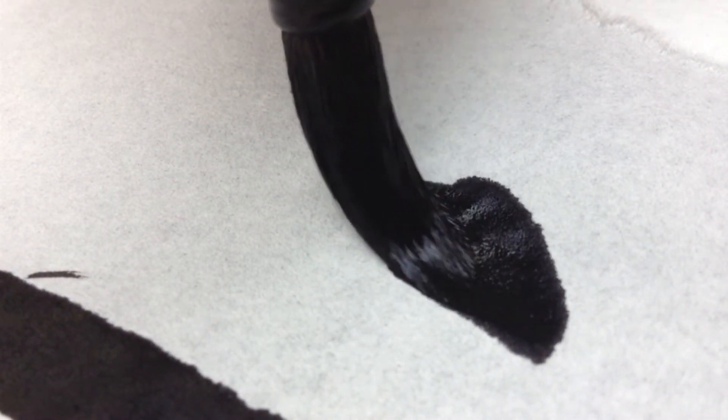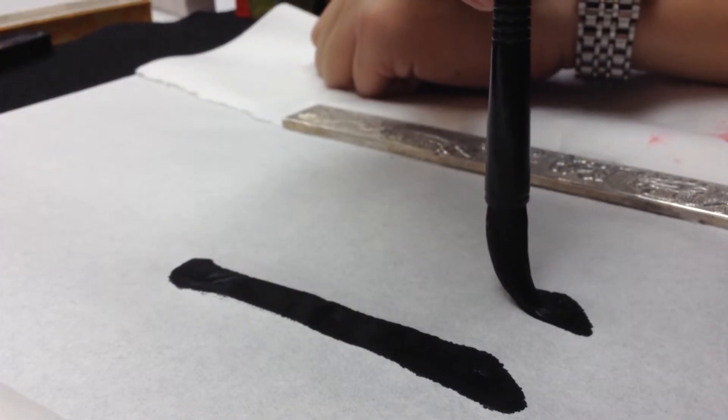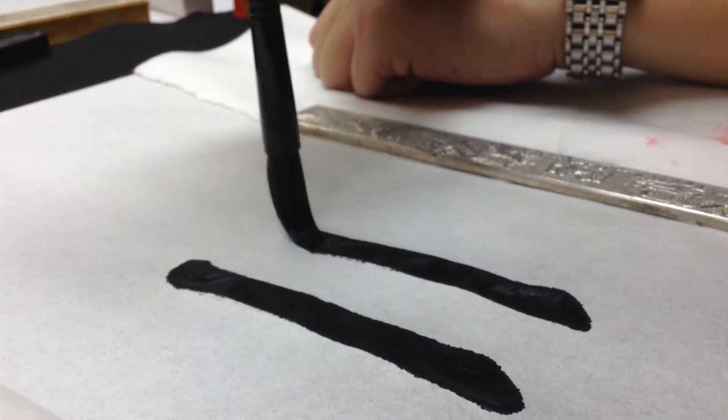This is called the qi bi, the beginning of the stroke. I draw it out in the middle of the stroke, which is the quickest.